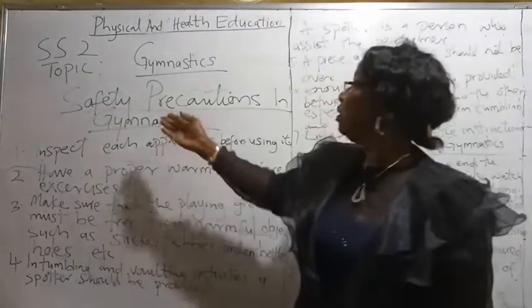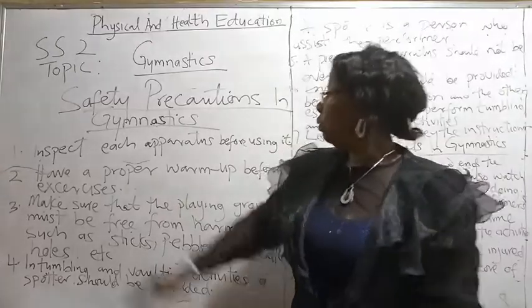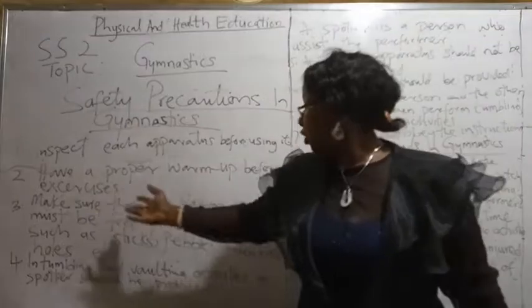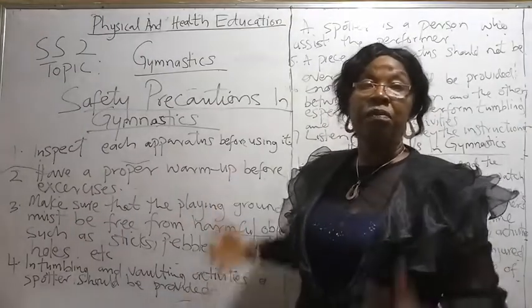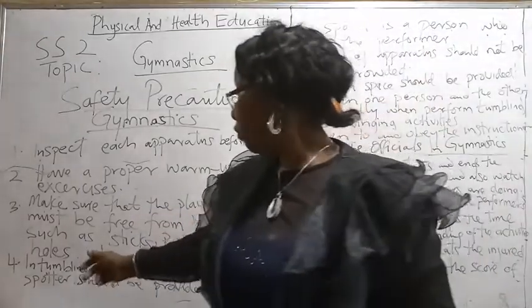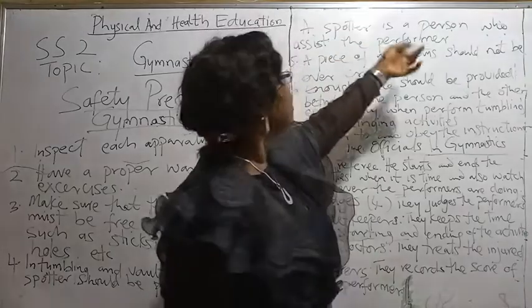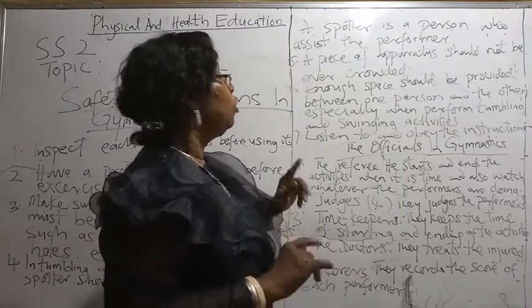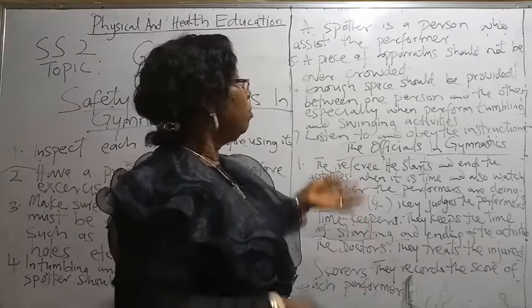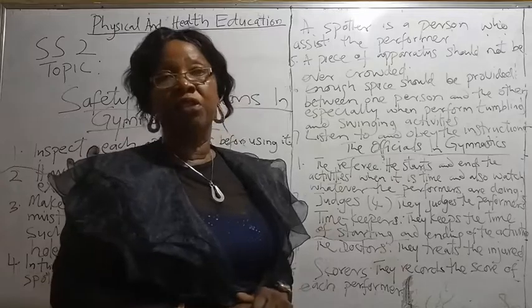Now let's go to safety precautions in gymnastics. 1. Inspect each apparatus before using it. 2. Have a proper warm-up before exercises. 3. Make sure the playing ground is free from harmful objects such as sticks, pebbles, broken bottles, etc. 4. In tumbling and vaulting activities, a spotter should be provided — a spotter is a person who assists the performer. 5. A piece of apparatus should not be overcrowded. 6. Enough space should be provided between one person and another, especially when performing tumbling and vaulting activities. 7. Listen to and obey instructions.